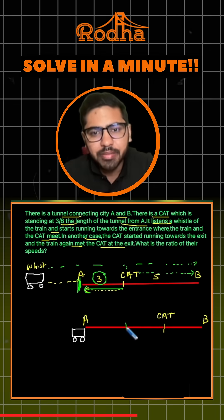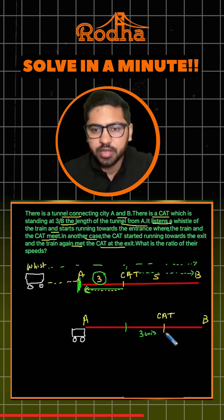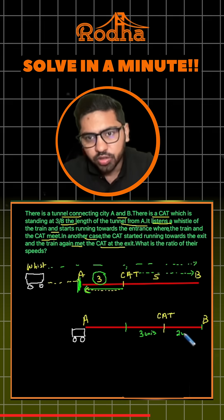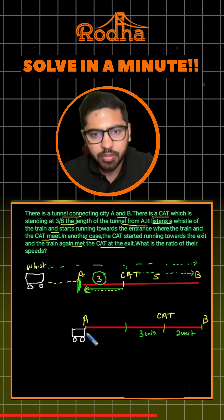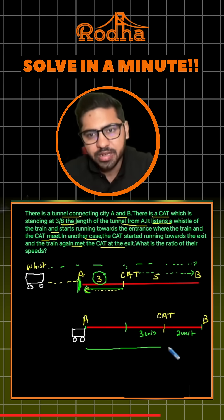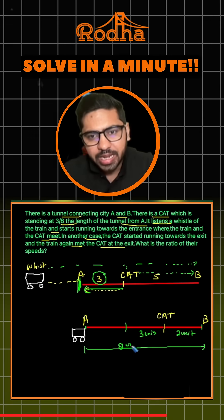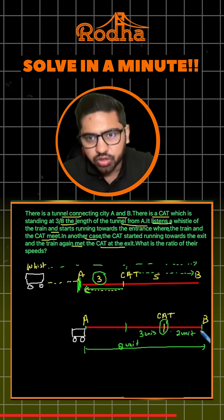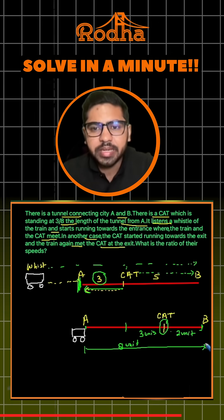Now consider the cat running 3 units towards the right instead. The cat now needs only 2 more units to reach city B. At that same moment, the train has just reached the entrance of the tunnel, so it still has 8 units to travel. Both the cat and train will then meet at the exit.